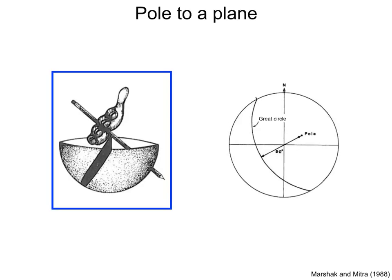The pole to a plane is the downward normal to the plane. This figure shows nicely how to visualize the pole in three dimensions. Use your hand to represent the plane, and hold a pencil perpendicular to your hand to represent the pole to the plane.